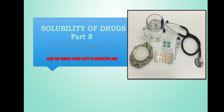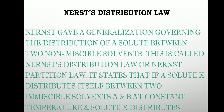This is Part 8 where we will discuss the topic of Nernst Distribution Law, also known as distribution coefficient, and its expression and limitations. For links to previous parts, check the description box. Distribution Law was given by Nernst — a scientist who gave a generalization governing the distribution of solute between two non-miscible solvents. This is called Nernst Distribution Law or Nernst Partition Law.